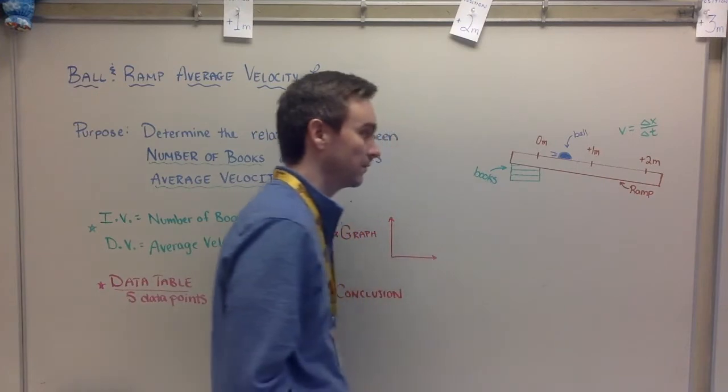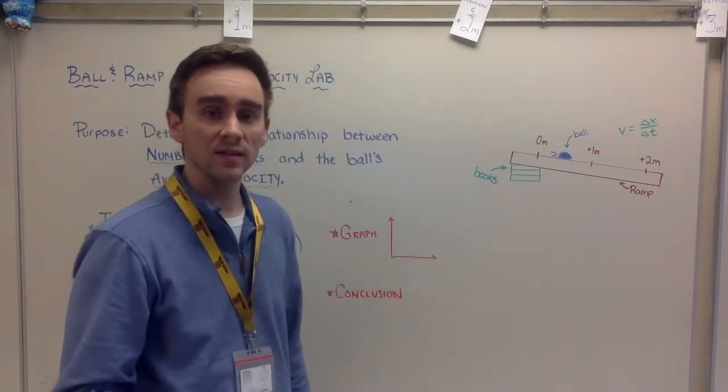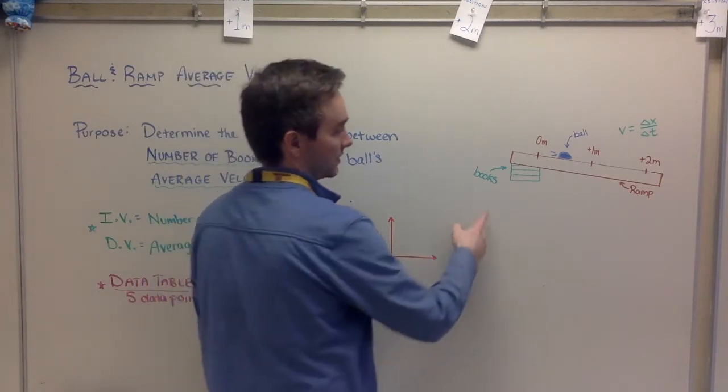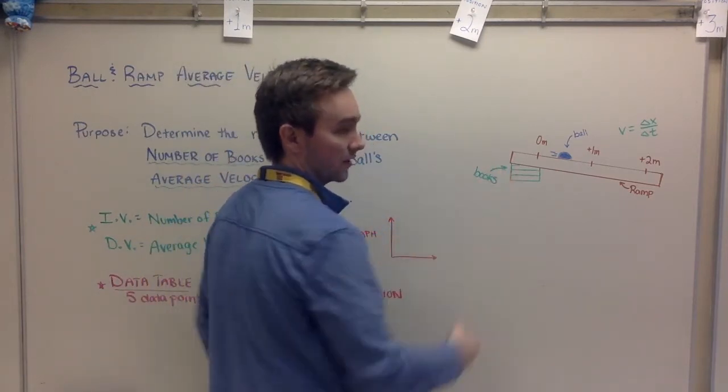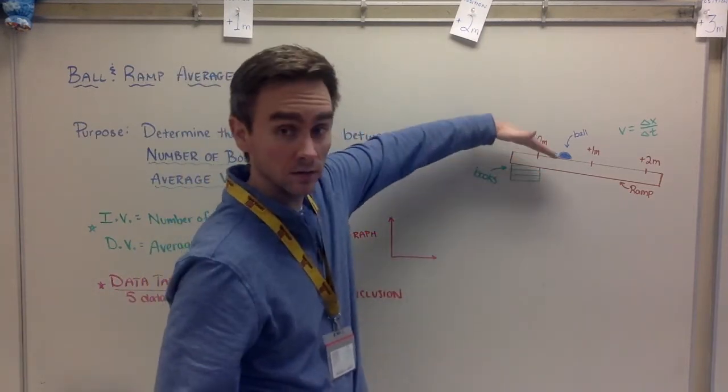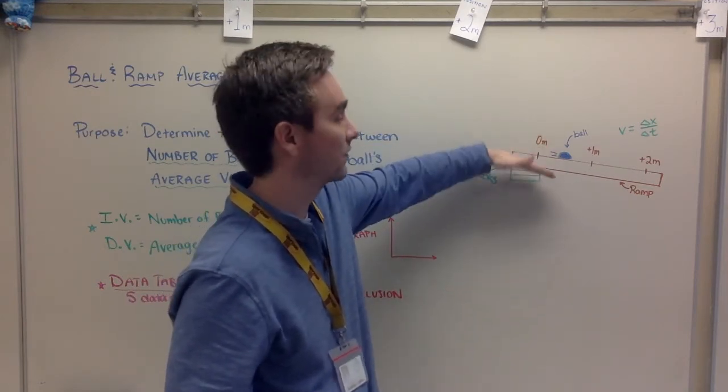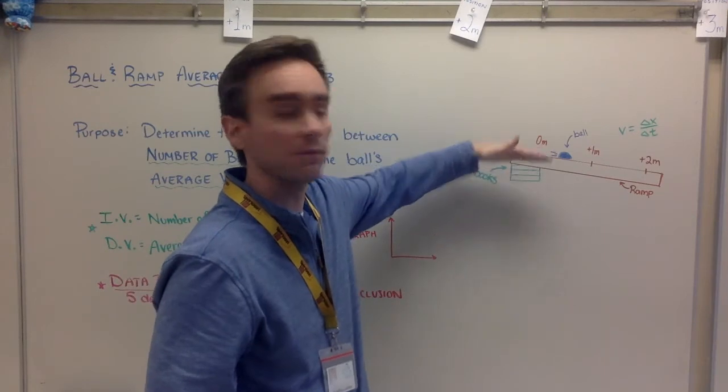What we are going to try to figure out is the relationship between the number of books under it, and that's going to create this incline. I'm not going to make you measure the incline with the protractor—that'd be annoying. I'm just going to do the number of books stacked underneath one side.